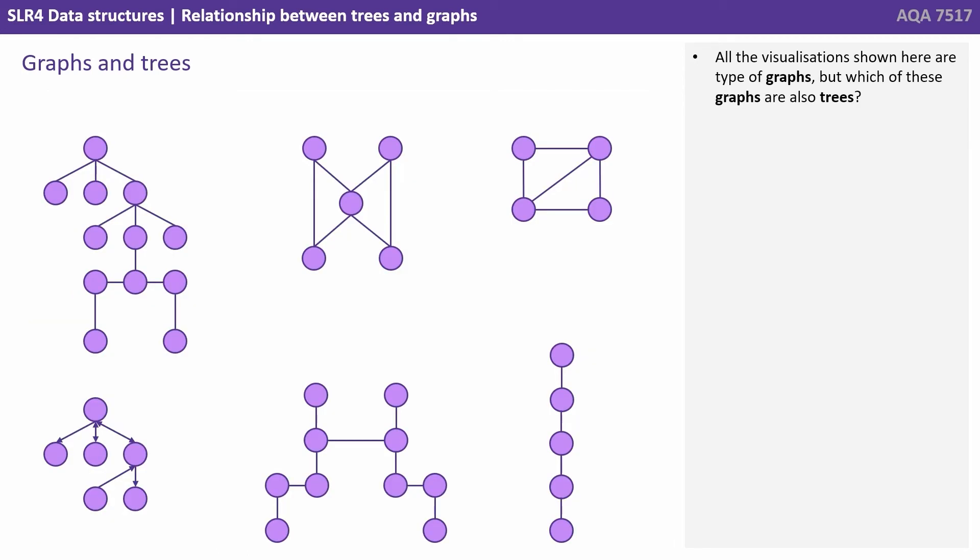All the visualizations shown here are types of graphs, but which of these graphs could also be considered trees?